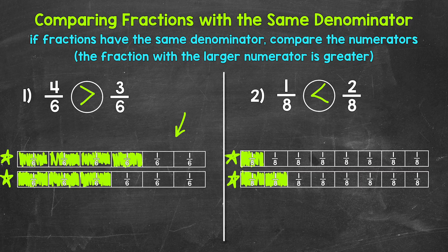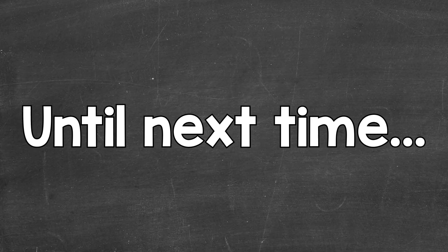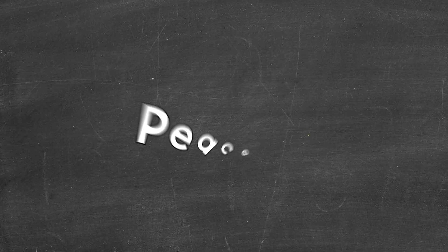So there you have it — that's how to compare fractions with the same denominator using fraction strips. Just remember, if the fractions have the same denominator, just compare the numerators. The fraction with the larger numerator is greater. I hope that helped. Thanks so much for watching. Until next time, peace.